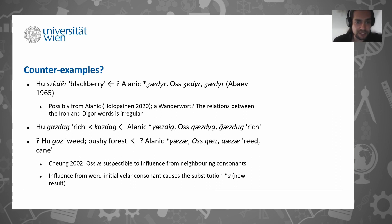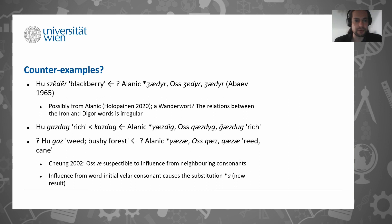There are also the Ossetic forms to consider. There are two main dialects of Ossetic: Iron and Digor. We see that the Iron and Digor forms actually have irregular relationships - this doesn't actually reflect a regular sound correspondence - so the word for blackberry does not really count in this discussion of regularity, because of these complications.